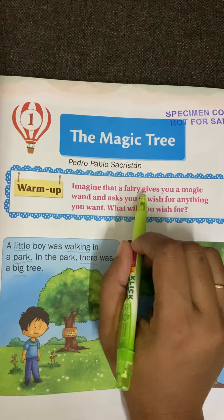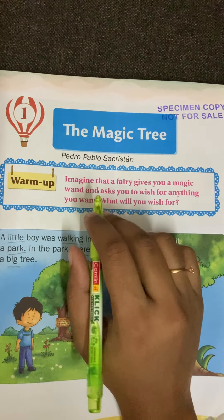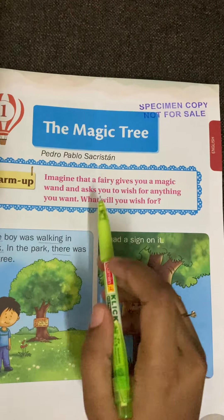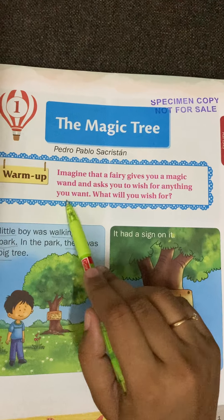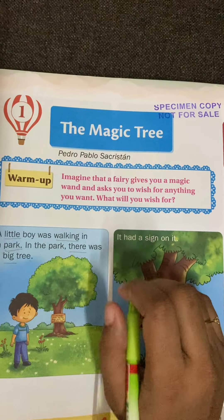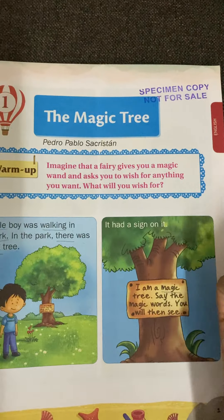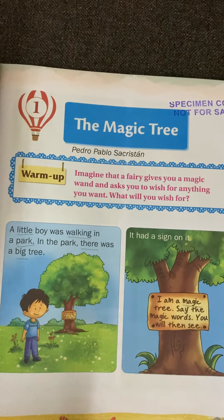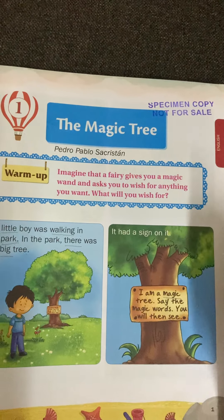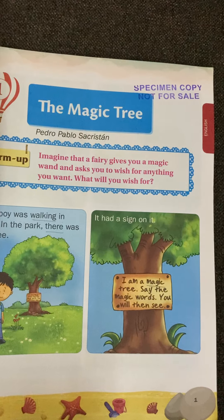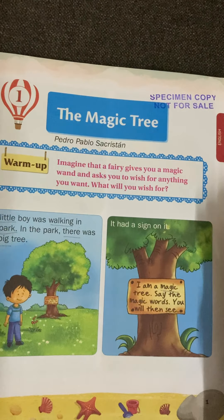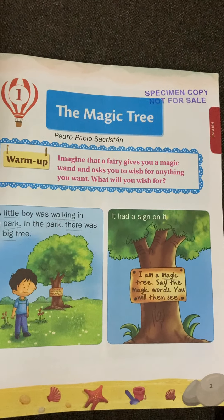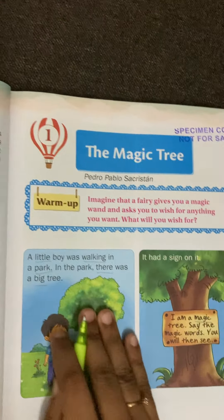Imagine that a fairy gives you a magic wand — a magic wand means something with which we can do magic — and asks you to wish for anything you want. What will you wish? Everyone has different wishes: like going to fairy land, visiting somewhere, or seeing your grandparents. Different children will have different wishes. Now we will go into the lesson.